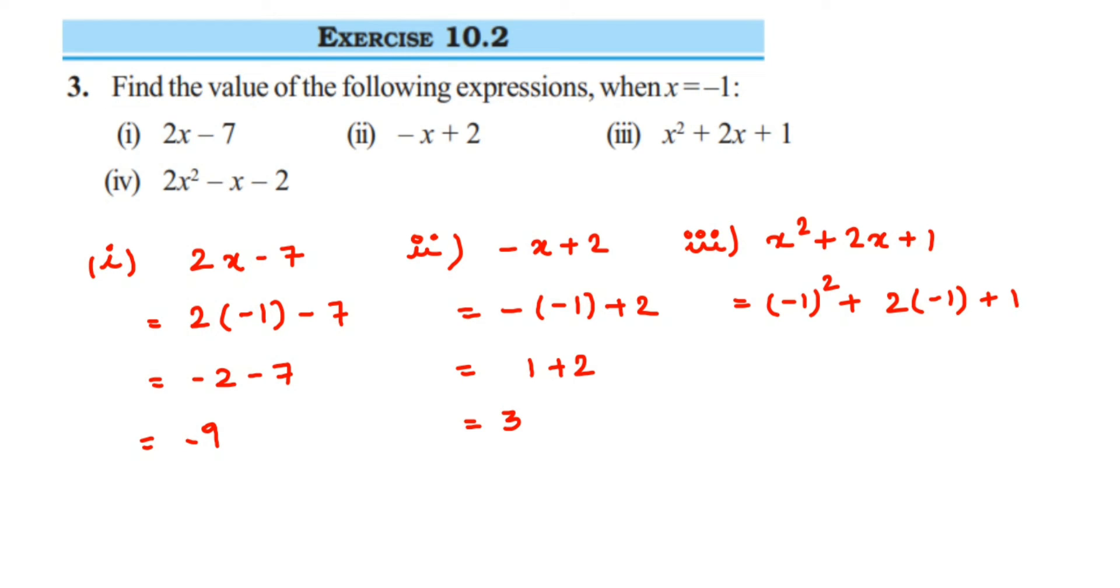So minus 1 square, it is like minus 1 into minus 1. So 1 times 1 is 1, minus into minus is plus. So we will get plus 1 or 1, just write down 1 here. Plus 2 into minus 1 is minus 2. So minus 2 and then plus 1.